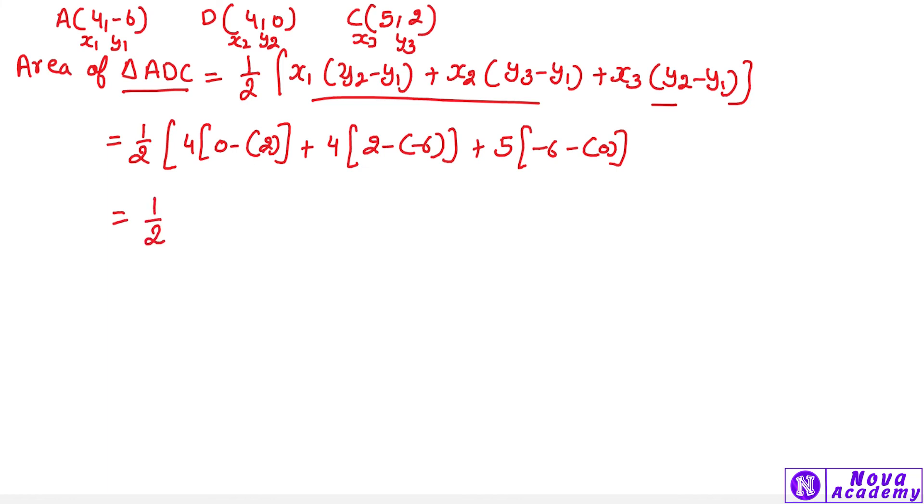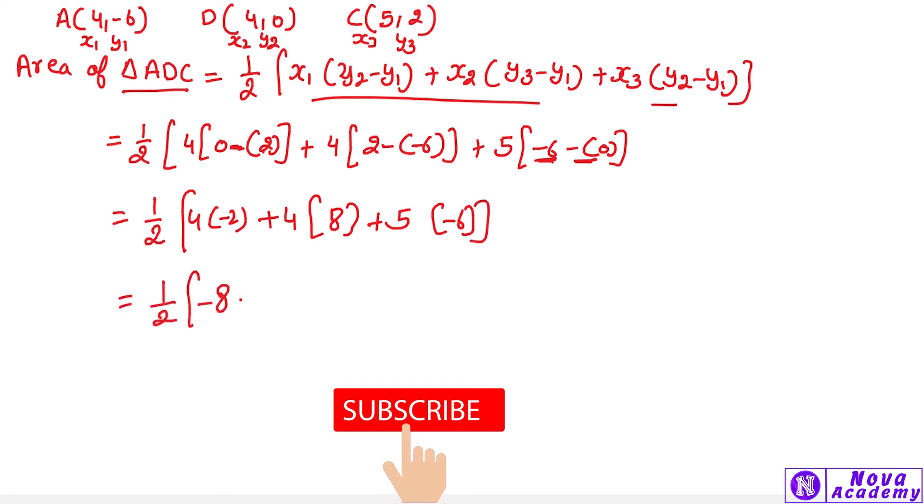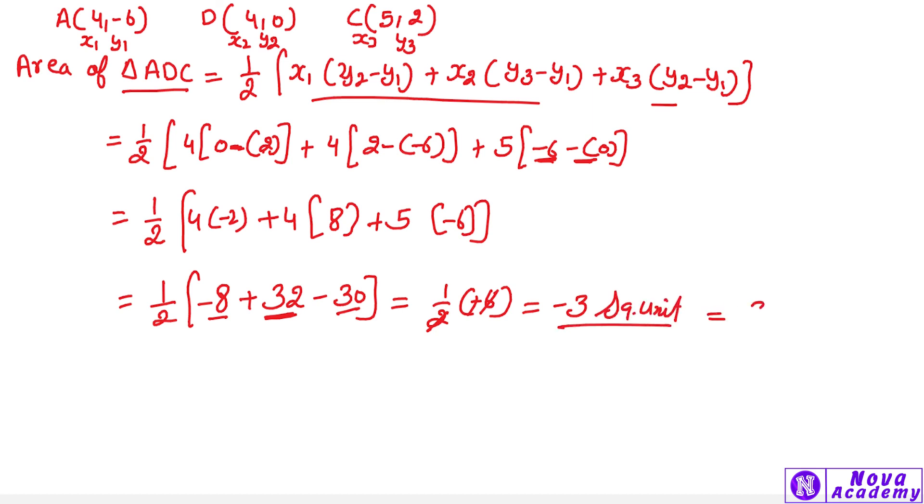1 upon 2, here we have -8 plus 32 minus 30, which is 32 minus 38, equals -6, so this is -3 square units. The area is always positive, so this is 3 square units.